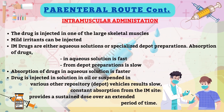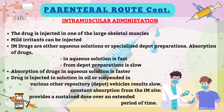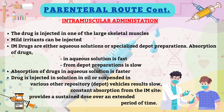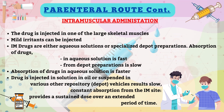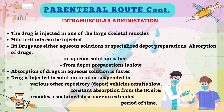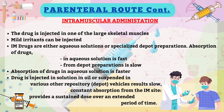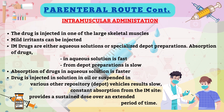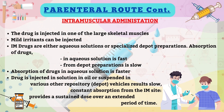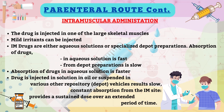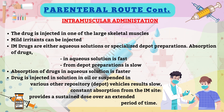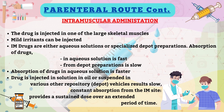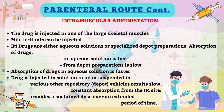In intramuscular (IM) administration, the drug is injected into one of the large skeletal muscles, such as the deltoid, triceps, gluteus maximus, or rectus femoris. Muscle is less richly supplied with sensory nerves, so mild irritants can be injected. It is more vascular, so absorption of drugs in aqueous solutions is faster. Drugs administered intramuscularly can be aqueous solutions or specialized depot preparations — absorption from aqueous solutions is fast, while that from depot preparations is slow.